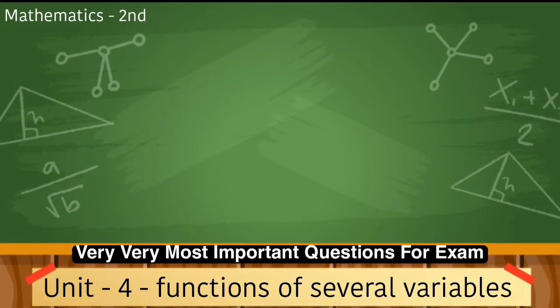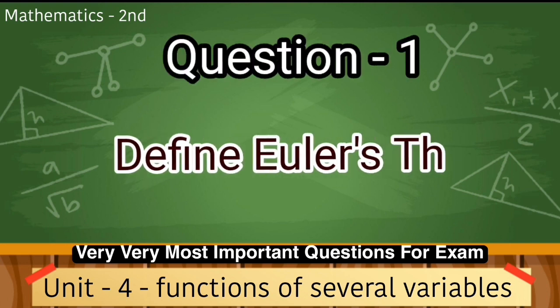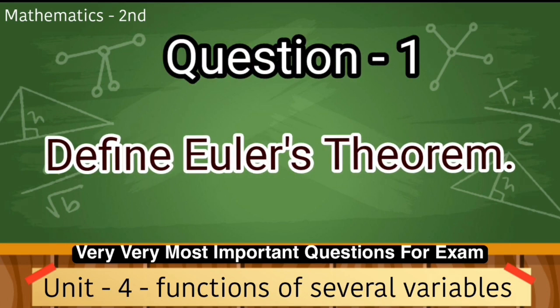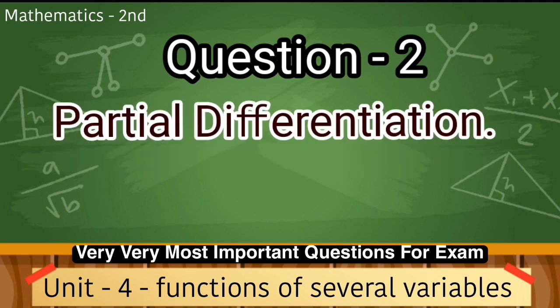Ab aatiye unit number four, jiska naam hai function of several variables. Jismein do most important questions hamare. Number one hai: Define Euler's theorem. Number second question hai: Partial differentiation.